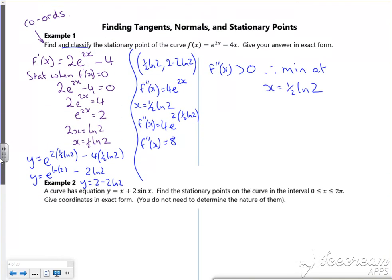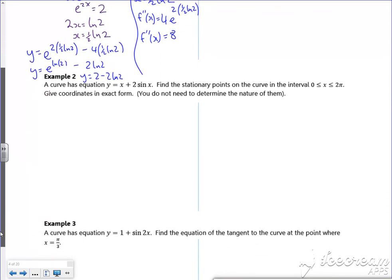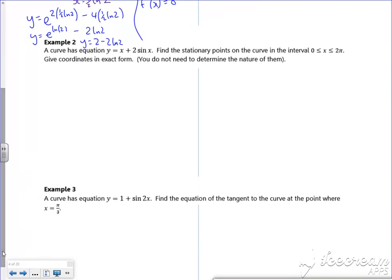We'll look at this second one. Everything we did before on normal differentiation we can do with these slightly more complex looking equations. So the curve has equation y equals x plus 2sin(x). Find the stationary points. Right, so once again, go and differentiate it.